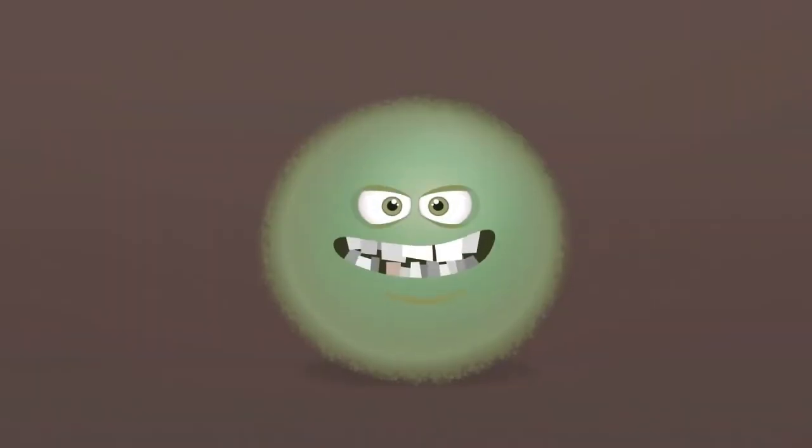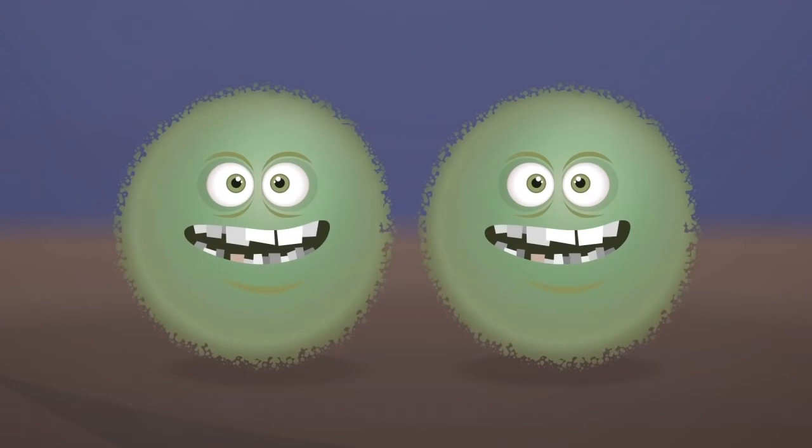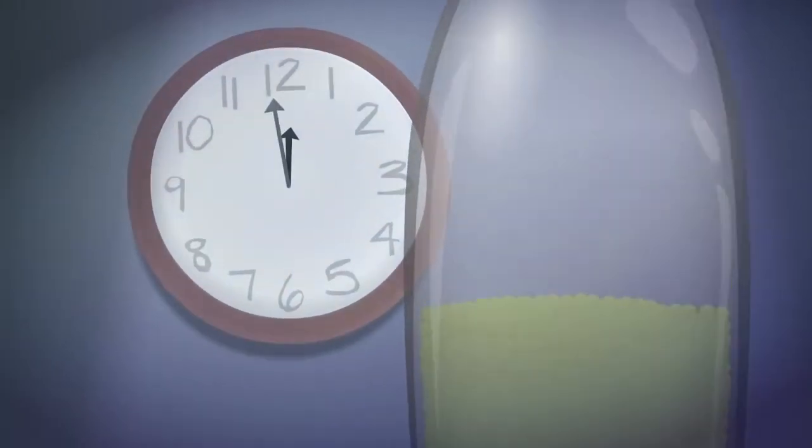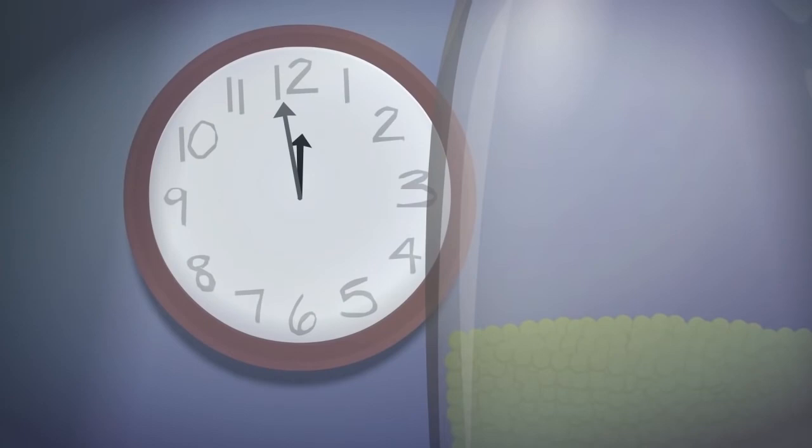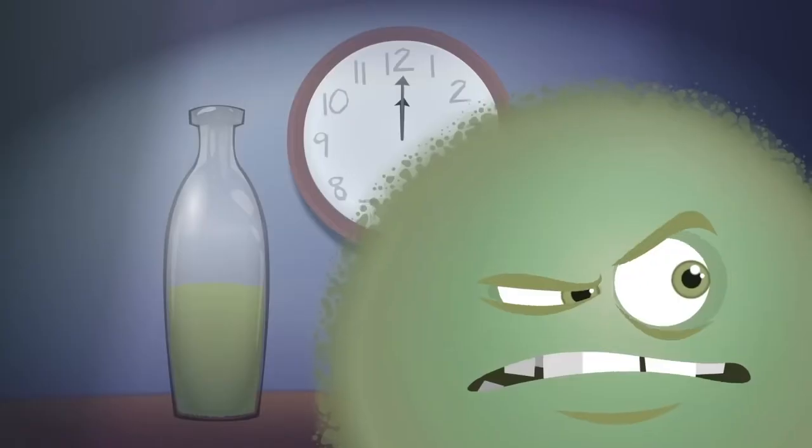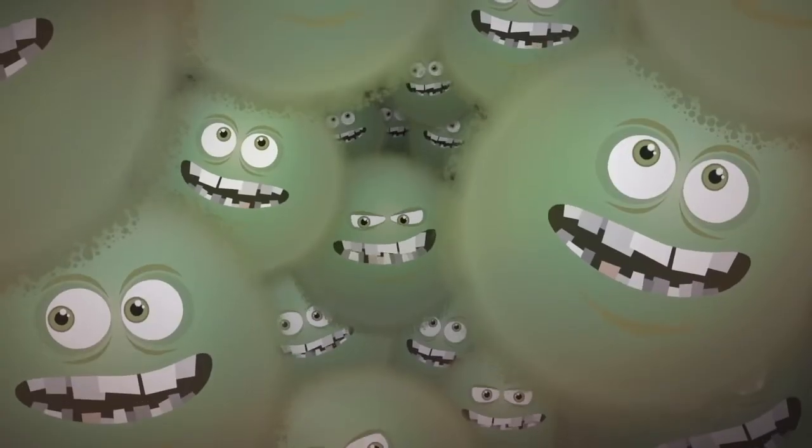These bacteria live in a bottle. Their population doubles every minute. At 11am, there is one bacteria. At 12 noon, the bottle is full. It is half full at 11:59, leaving only enough space for one more doubling. The bacteria see the danger. They search for new bottles and find three. They assume that their problem is solved.